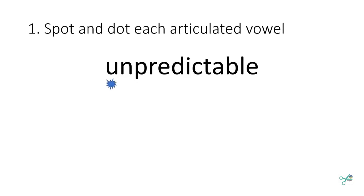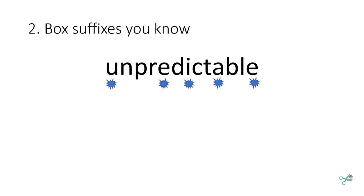The first step to reading a big word is to spot and dot the vowels to identify the number of syllables. We don't dot a silent E usually, but in this word we know that consonant-le is a syllable type with a vowel sound, so we'll dot that vowel as a syllable. Step two has us box any suffixes we know — 'able' is a suffix that means 'able to be.'